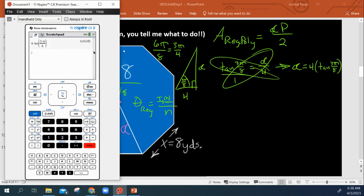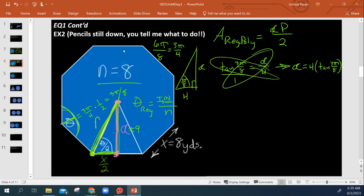5 over 8. So about 9.66. So my apothem is about 9.66, and we're in yards.